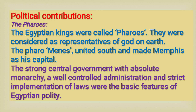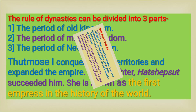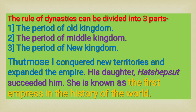Relating to the dynastic rule, the dynasties can be divided into three parts: the period of old kingdom, the period of middle kingdom, and the period of new kingdom. Thutmose I conquered new territories and expanded the empire. His daughter Hatshepsut succeeded him and is known as the first empress in the history of the world.